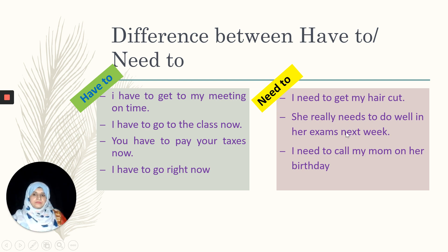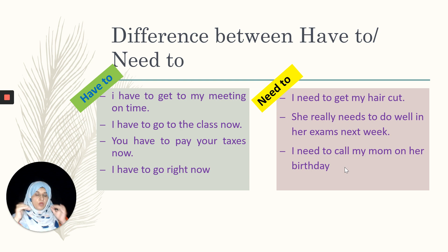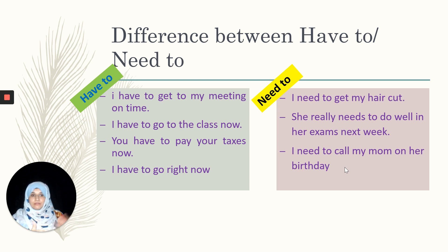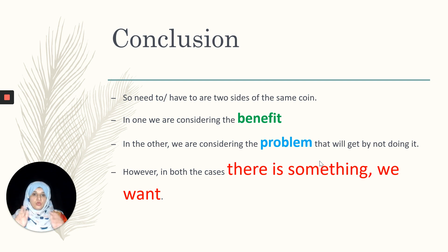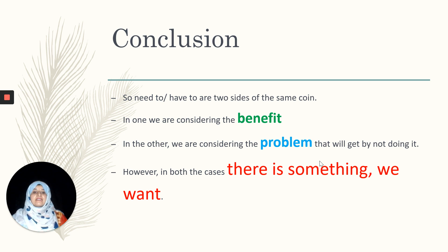Next example: I need to call my mom. In this example I'm not thinking about negative consequences — I am thinking about the pleasure I can get if I call my mom, or the comfort which my mom can get if I call her. So 'need to' and 'have to' are two sides of the same coin: in one we are considering the benefit, while in the other we are considering the problem of not doing it.